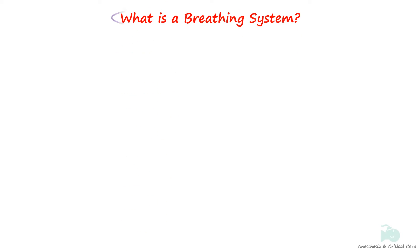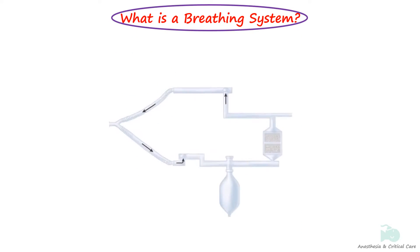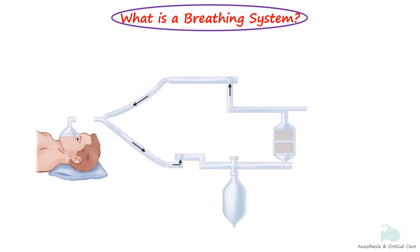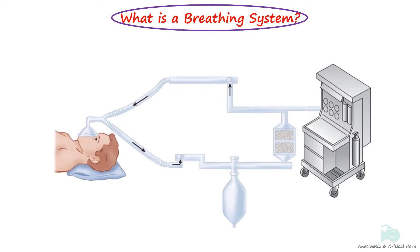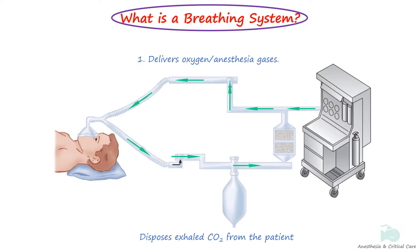The breathing system is an assembly of components which connects the patient's airway to the anesthesia machine. This creates an artificial atmosphere from and into which the patient breathes. All anesthesia breathing systems have two fundamental purposes: first, it delivers oxygen and anesthetic gases to the patient, and secondly, it eliminates carbon dioxide either by washout with adequate fresh gas flow or by carbon dioxide absorption.